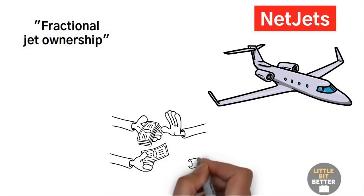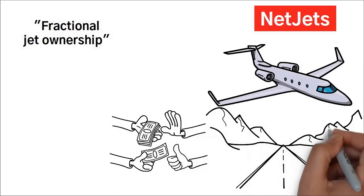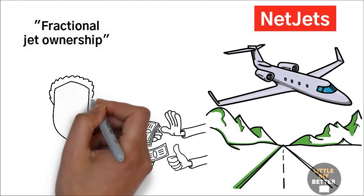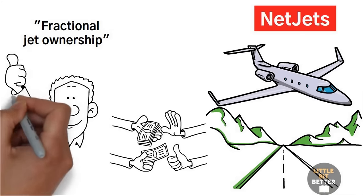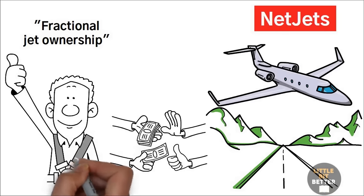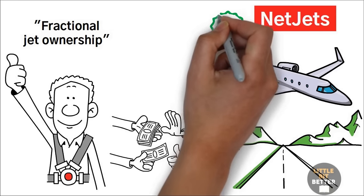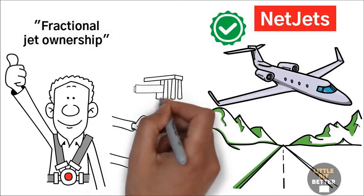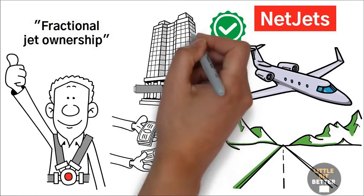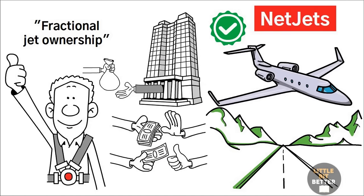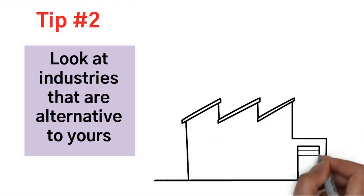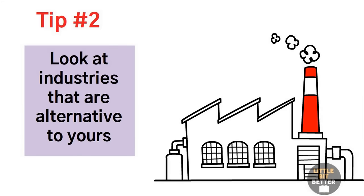NetJets created a new way of air traveling called fractional jet ownership. This means customers don't buy a whole private jet, but only a small part of it. This makes it a lot cheaper than buying a whole jet. Plus, you don't have to change planes or wait in line at the airport. It only takes a few minutes to go from your car to take off. You can complete trips much faster and arrive at your destination, energized and fresh. The final result is that buyers get the convenience of a private jet at the price of commercial airline travel. NetJets created a new market by combining the best parts of private jets and commercial airlines and eliminating everything else. This made them a multi-billion-dollar company, and they are still the biggest in the business. So tip number two is to look at industries that are alternative to yours. Especially focus on the key factors that cause customers to switch from your industry to another industry.